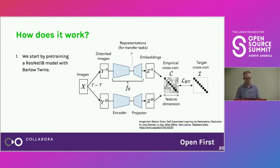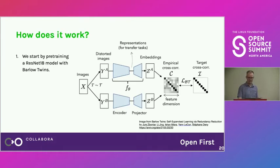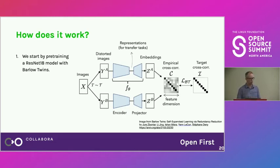Let me spend a few minutes explaining how this works. The interface is browser-based — browsers are great at showing images. On the backend, we do a little deep learning for sorting. We start by pre-training a ResNet-18 model with Barlow Twins. A Google paper actually says that simpler models work better for visual similarity, recommending even ResNet-6, but I stuck with ResNet-18.